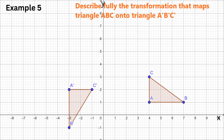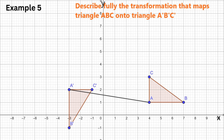We are given two triangles: the original triangle ABC and its rotated image. Our goal is to find the center of rotation — the fixed point around which the triangle was turned. To start, we draw straight line segments connecting the original points to their corresponding image points: from A to A', from B to B', and from C to C'. These lines represent the movement of each vertex during the rotation.